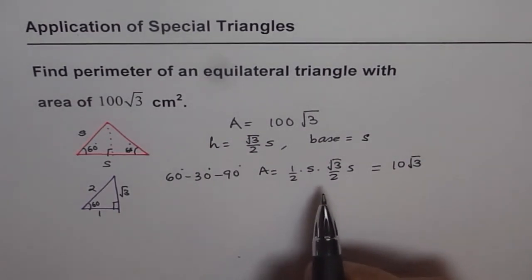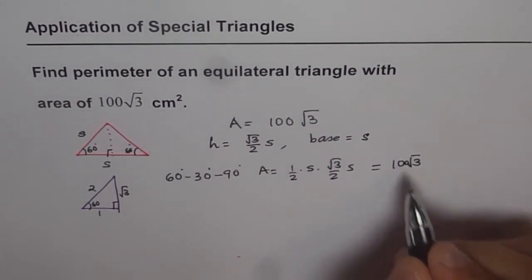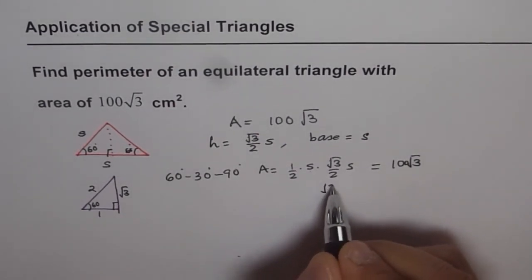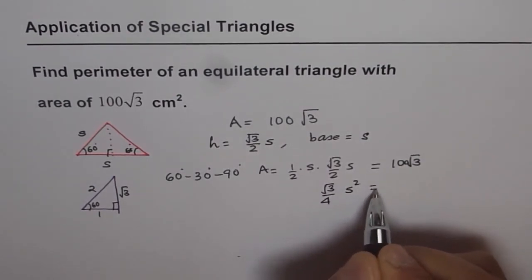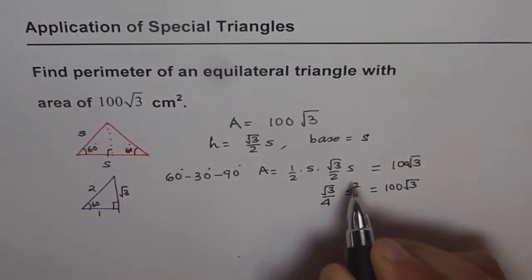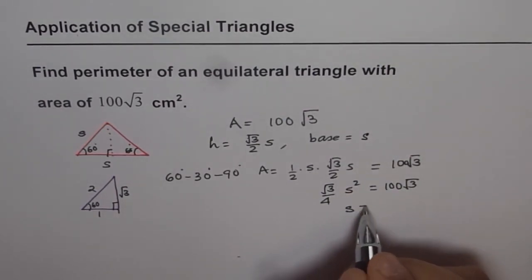So what do we get? From here, we get (√3/4)s² = 100√3. And that gives us a solution of s equals to...